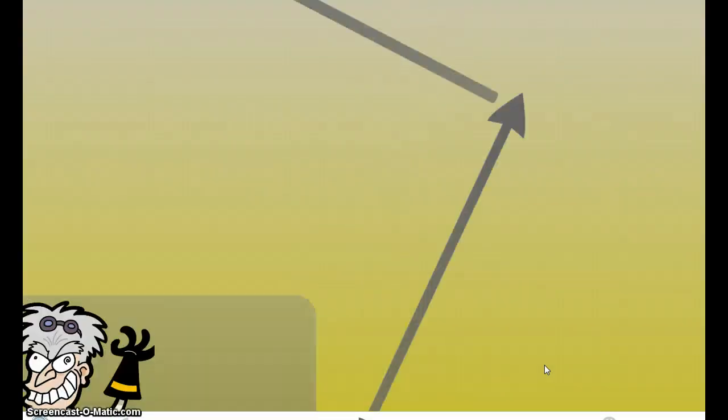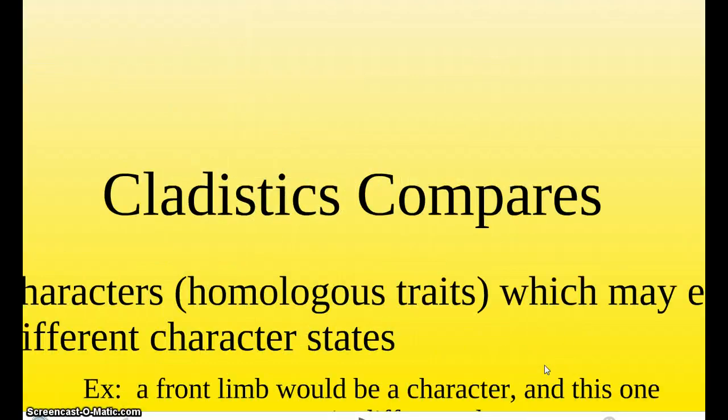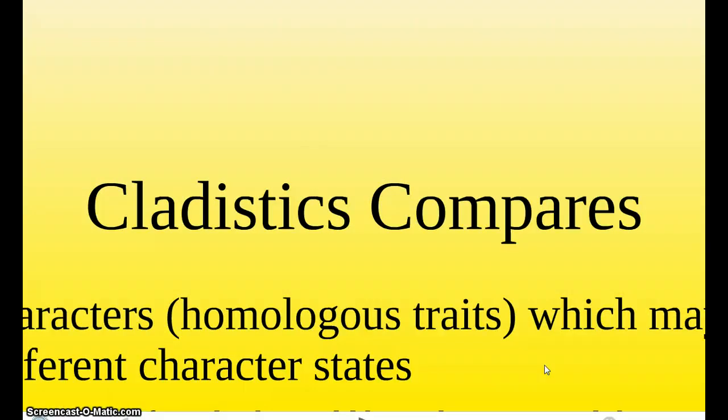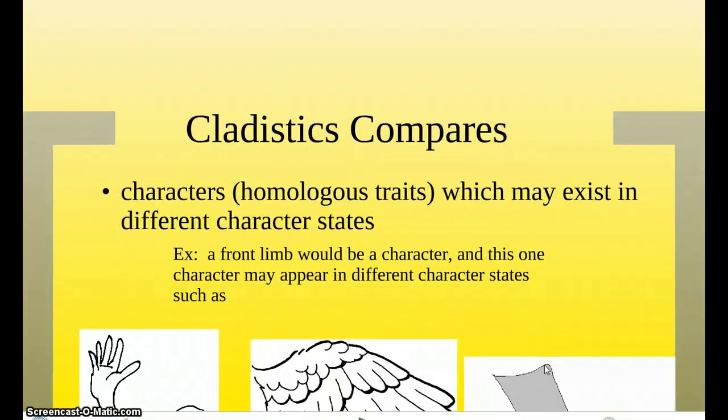Cladistics compares characters, also known as homologous traits, which may exist in different character states.